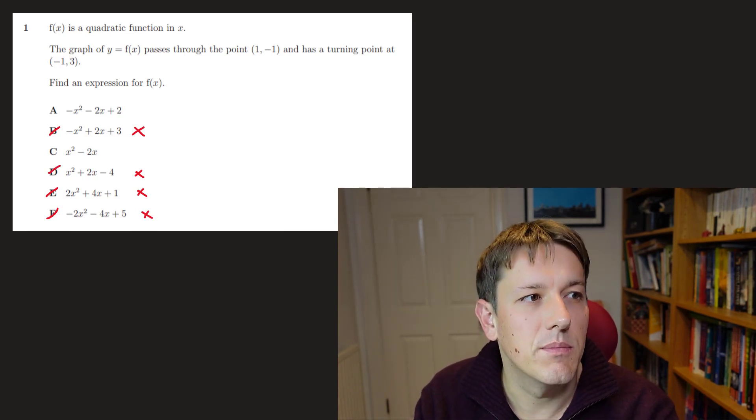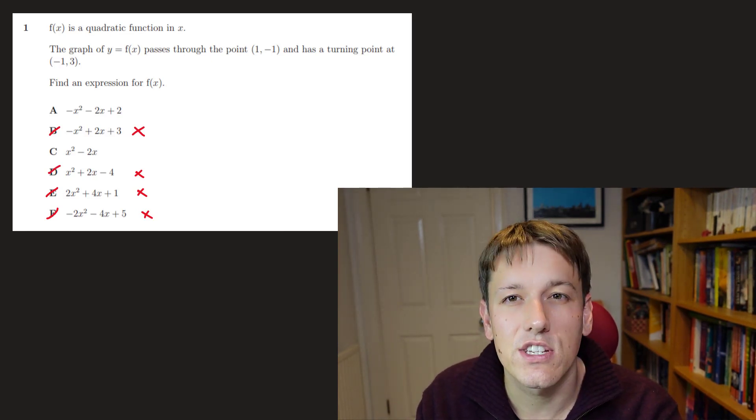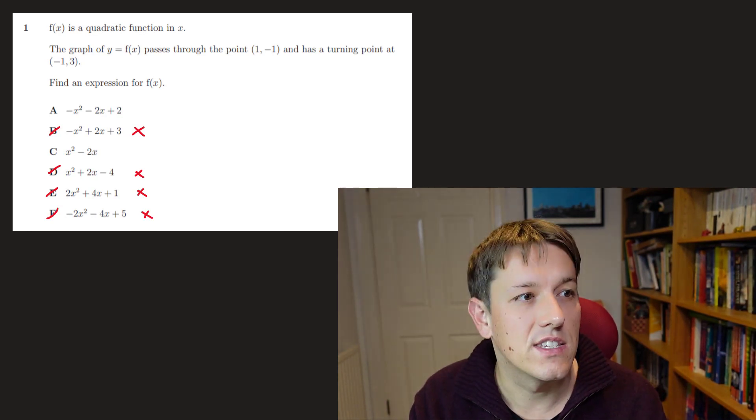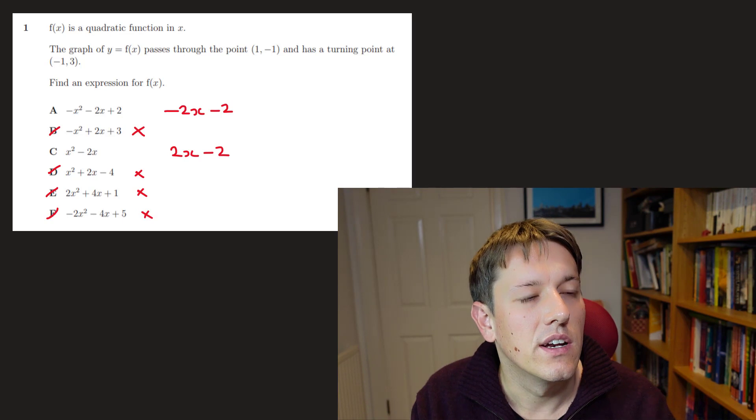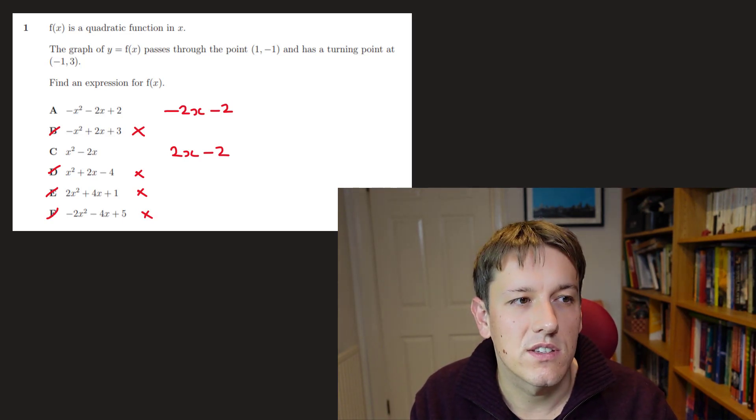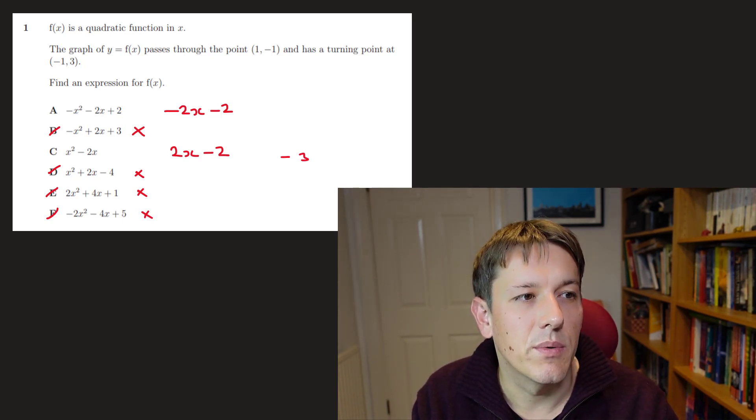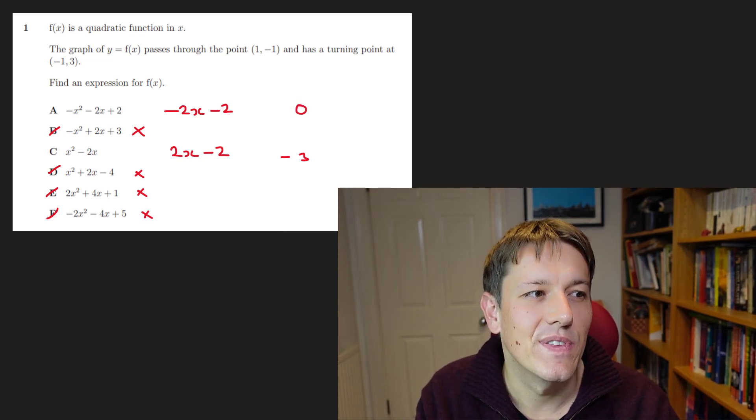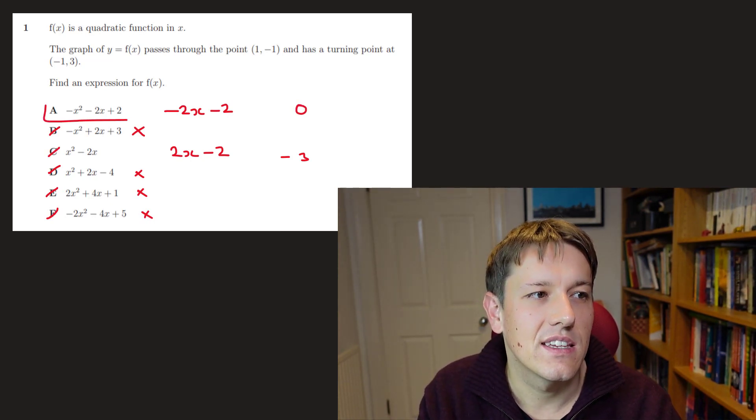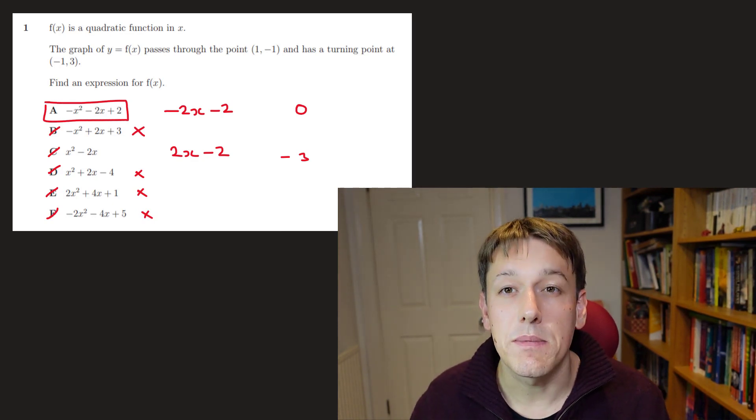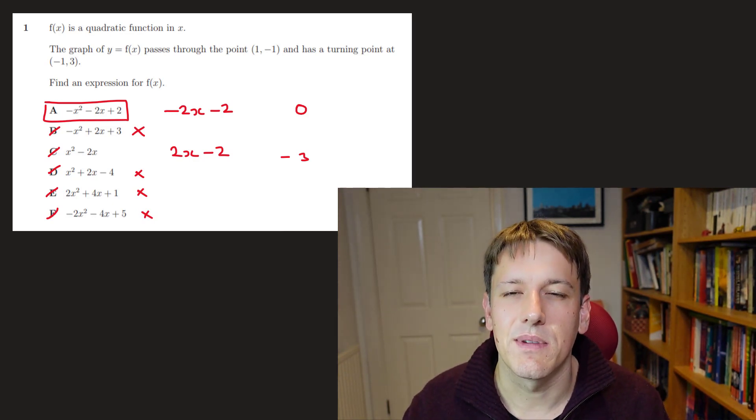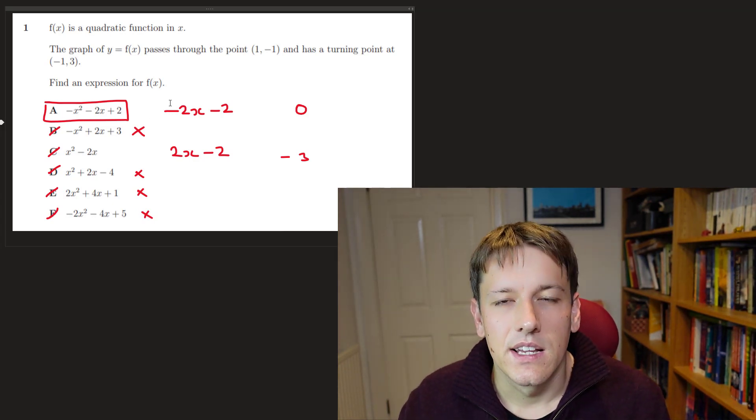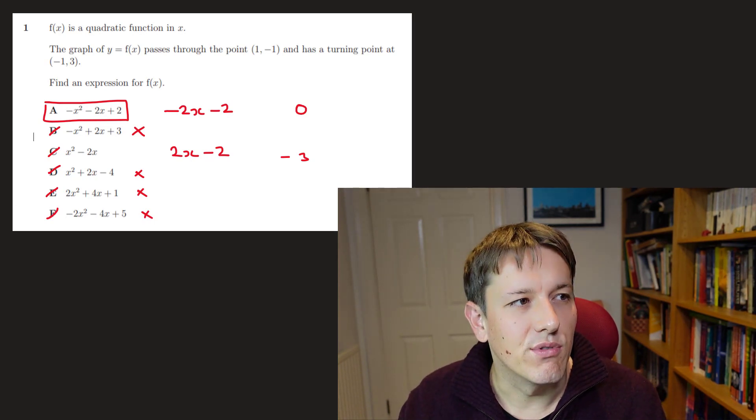Now, the fact that it's a turning point at (-1, 3) means that when I differentiate it and substitute in -1, I should get 0. So the derivative of A is -2x - 2, and C is 2x - 2. When I put -1 into 2x - 2, I get -4. But when I put it into -2x - 2, I do get 0. So the answer is not C, it's A. So although you can maybe make a direct argument here instead, sometimes the multiple-choice questions here make it clear that was a very good route to go.